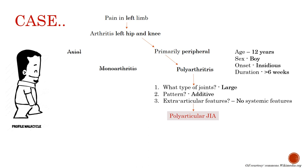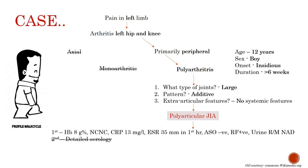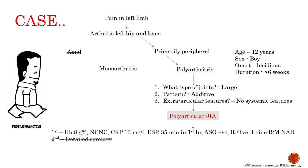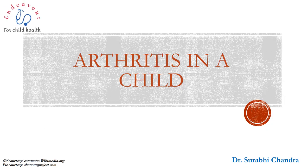The child was started on naproxen and showed some improvement. Investigation reports showed hemoglobin 8 g% (normocytic normochromic anemia), CRP 13 mg/L, ESR 35 mm/1st hour, ASO negative, and rheumatoid factor positive. Urine was normal. Second-line detailed serology was not required, and the child was finally diagnosed as rheumatoid factor-positive polyarticular JIA. This illustrates the systematic approach to a child presenting with arthritis.